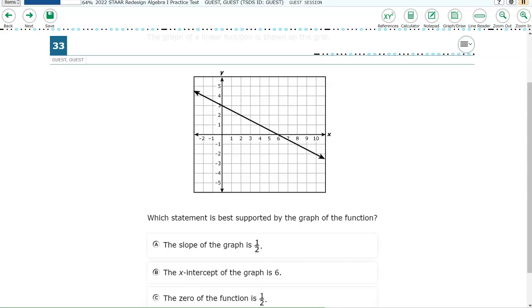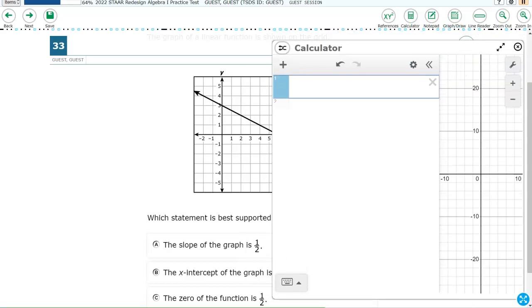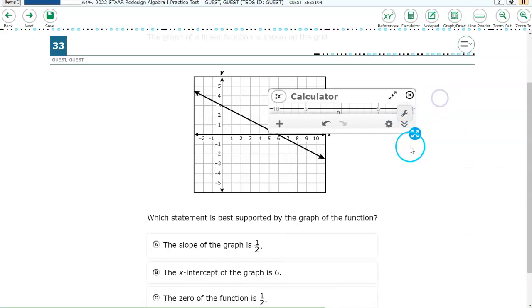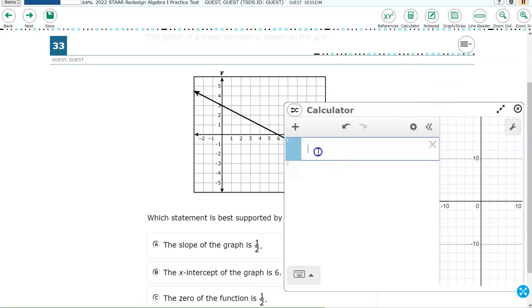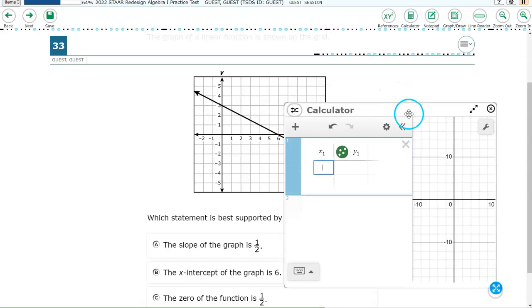The next item we're looking at is item number 33. This says, which statement is best supported by the graph of the function? So I'm going to try to graph this function. Go ahead and click on calculator. And I'm actually going to use a table. I know that's kind of weird. But if you need an equation or you need a graph to be recreated, that's one way to do it. So let's go ahead and create a table.